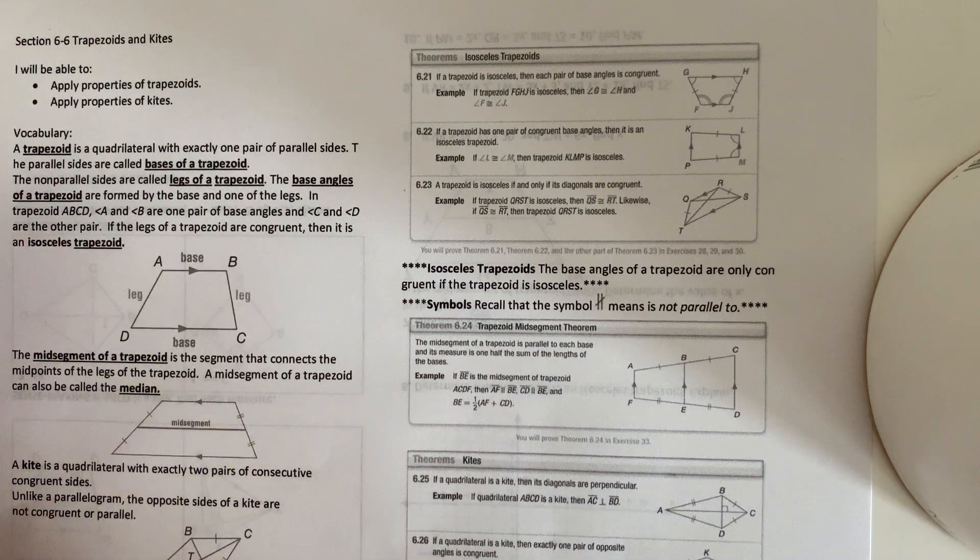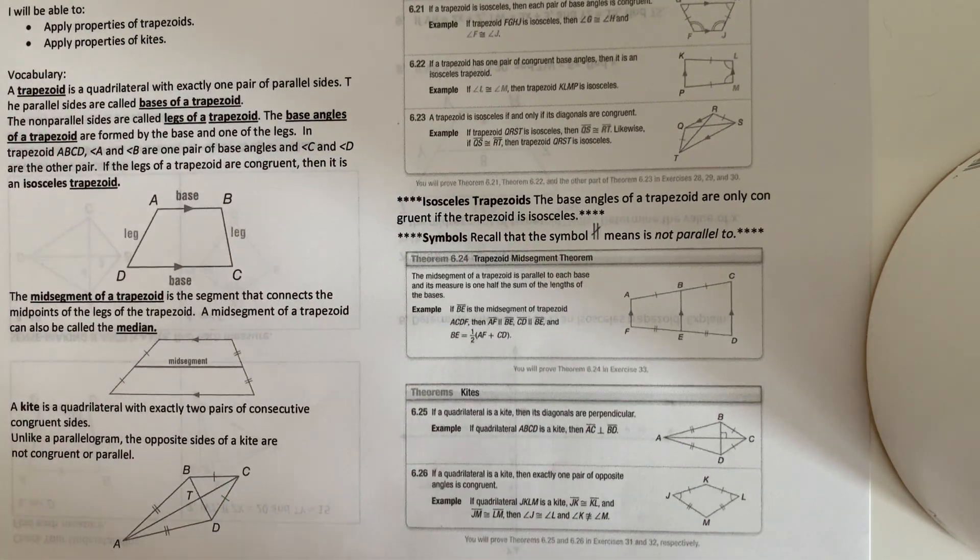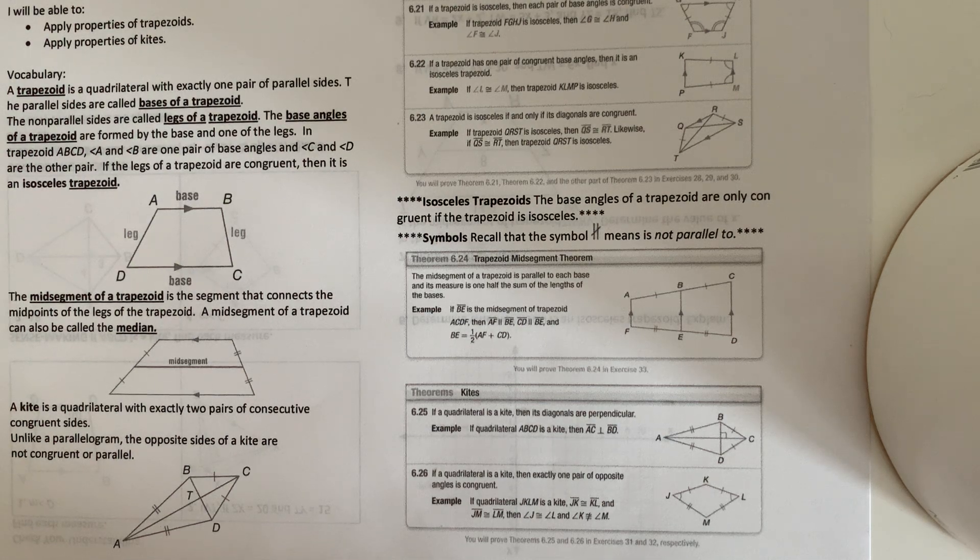A kite is a quadrilateral with exactly two pairs of consecutive congruent sides. Unlike a parallelogram, the opposite sides of a kite are not congruent or parallel.